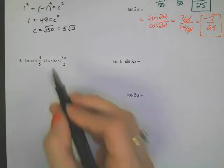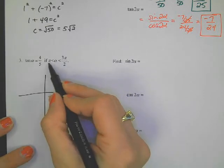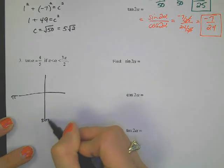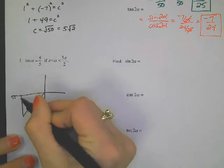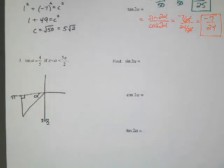Last one. We've got our angle between pi and 3 pi over 2. Pi is right here. 3 pi over 2 is here. So let's draw our angle in quadrant 3. Here's our triangle. Alpha is right there. Tangent is 4 over 5. Why don't you go ahead and give these a try. Fill out the triangle. Use the trick. Use the formulas. And I can't wait to see what you get.